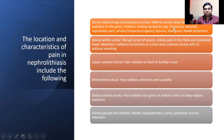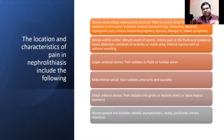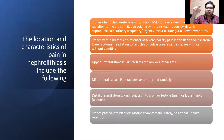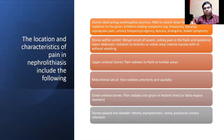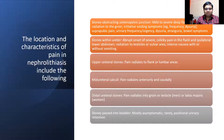If a stone is partially obstructing the ureteropelvic junction, causing hydronephrosis and obstructive nephropathy, the patient can have fixed renal pain radiating to the front. If the stone is in the ureter, the pain is due to dilatation of the proximal ureter causing renal distension and capsular stretching. Nerve irritation from the ureter due to stone impaction also causes colicky pain, radiating along the iliohypogastric and ilioinguinal nerves from loin to groin.